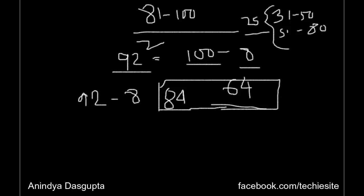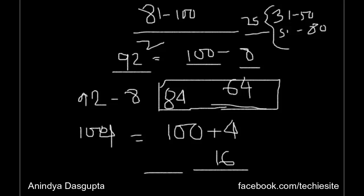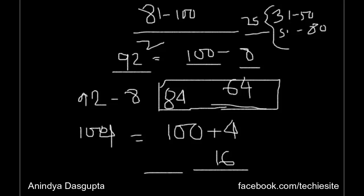For numbers greater than 100, the same technique applies. Take 104: it is 100 plus 4. The last two digits are 4 squared, which is 16. For numbers greater than 81 or greater than 100, the base for the first two digits is the number itself, and the base for the last two digits is 100. So the first two digits are 104 plus 4, which is 108. Therefore, 104 squared is 10816.